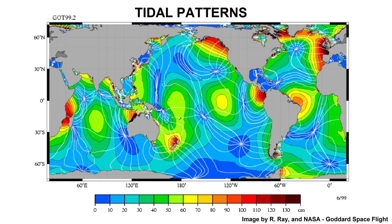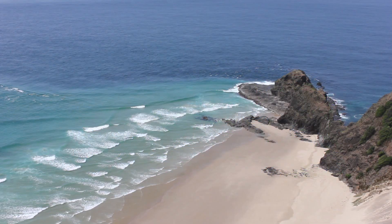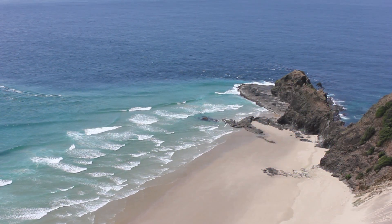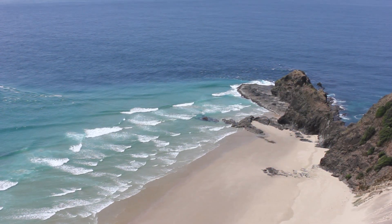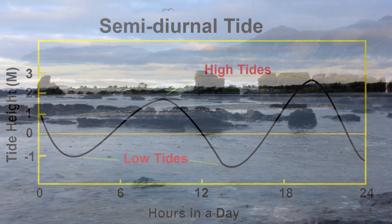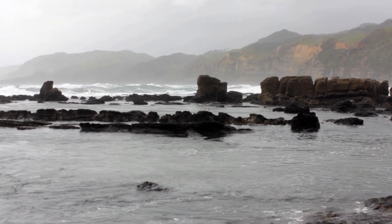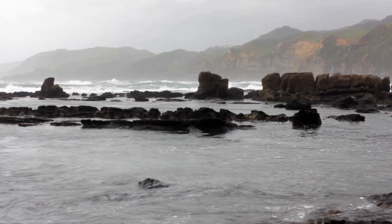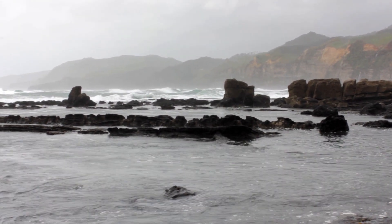Because of the different characteristics of each ocean basin, different tidal patterns are established. There are three main tidal patterns that occur along the Earth's coastlines. When there are two high tides and two low tides each day, we call this a semi-diurnal tide. This is the most common tidal pattern around the world, and it's the case for New Zealand's coastline.